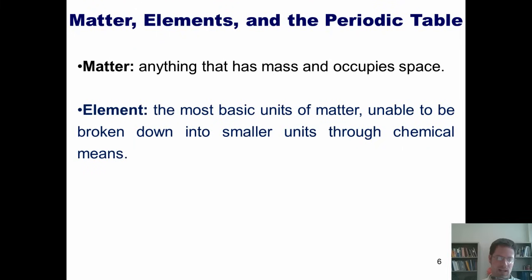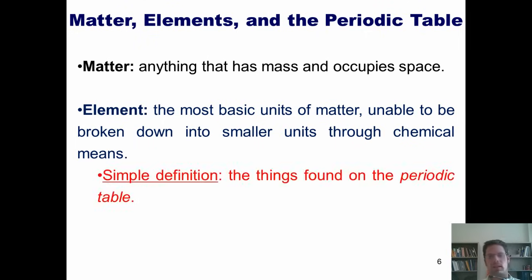What is an element? An element is the most basic unit of matter, unable to be broken down into smaller units through chemical means. Simple definition for that is, elements are the things found on the periodic table.